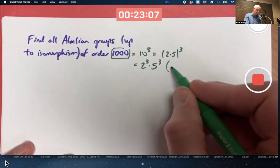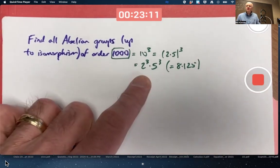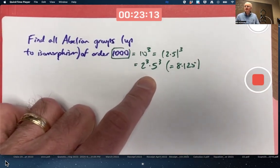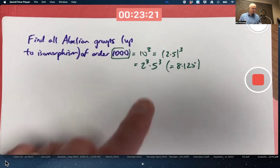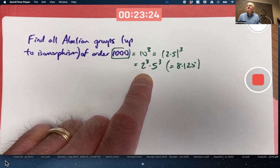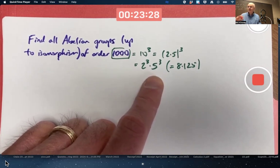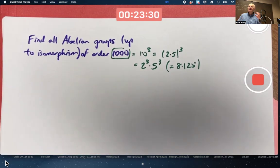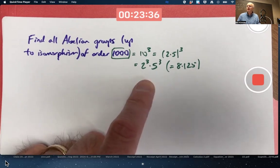So our prime factorization is 2 cubed times 5 cubed. Yes, that's 8 times 125. But more importantly, think of it as 2 cubed times 5 cubed. What I would do at this point is break the problem down and first think about how many abelian groups there are of order 2 cubed, 8, and how many abelian groups there are of order 5 cubed, and write them all down. And then from those lists, combine them to come up with a list for the abelian groups of order 1,000.